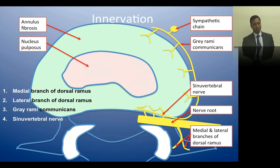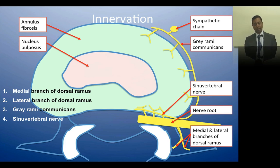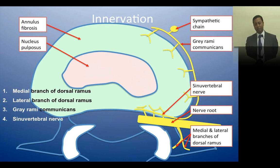To recap the innervation at each level: the nerve root gives out the posterior branch which has medial and lateral branches. The medial branch supplies the facet joint, the ligaments, and the paraspinal muscles. The lateral branch supplies mainly the muscles. The branches from the sympathetic chain — the gray rami communicantes — supply the anterior lateral aspects of the disc and the anterior longitudinal ligament. The sinovertebral nerve supplies the posterior aspects: the dura, posterior longitudinal ligament, and the posterior aspect of the intervertebral disc.